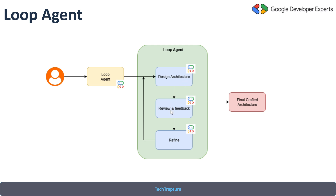The second sub-agent will review the architecture. We have given it specific best practices — what to review and what things need to be refined. Based on that, it will give feedback. This feedback and the architecture are then shared with the third sub-agent, which is the refiner. The refiner makes changes and sends it back to the original architecture design sub-agent.